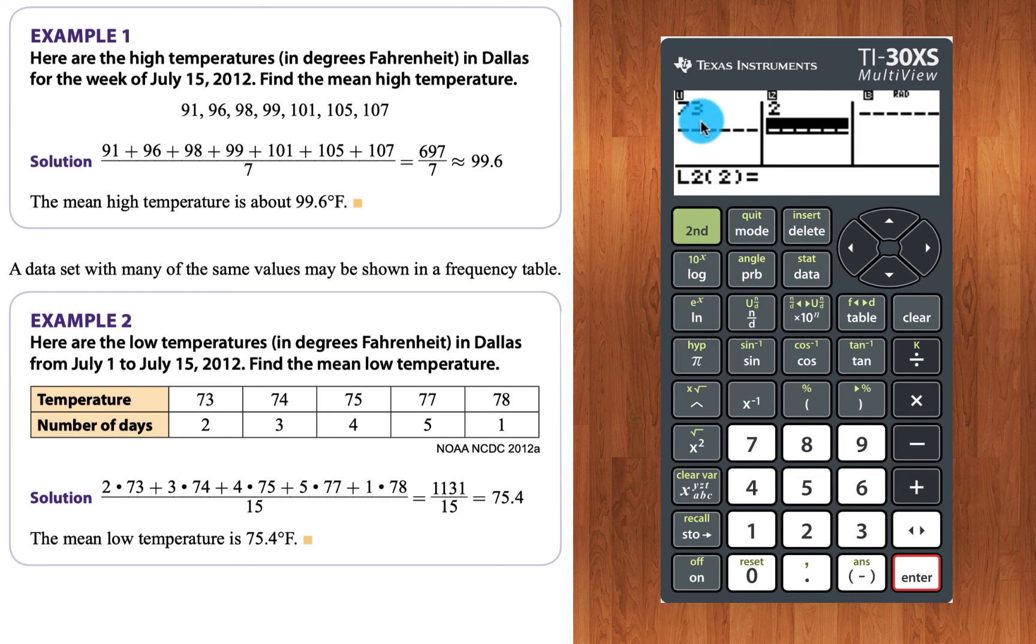And 2 is going into list 2. Now what this is going to say is 73 is in here twice. And then 74, enter, directional arrow key over, 3. And we put that in. And the rest of the data goes in accordingly.